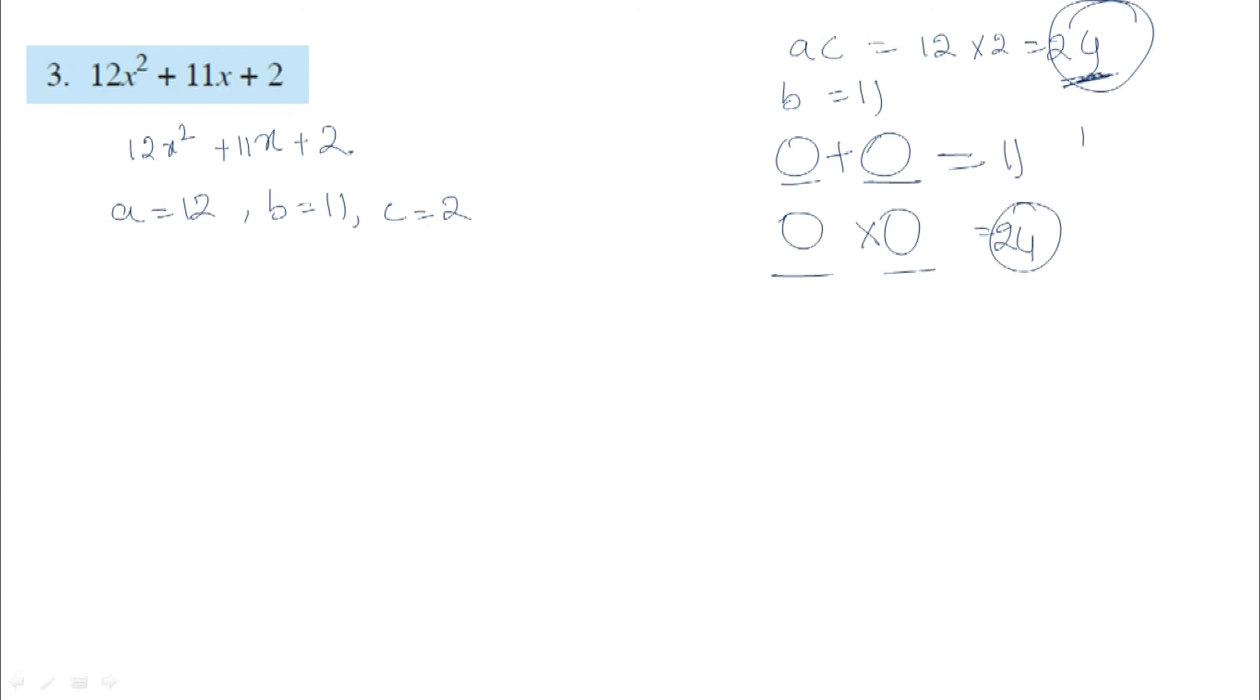First, write the factors of 24: 1 and 24, 2 and 12, 3 and 8, and 6 and 4. In these 4 pairs, when we multiply we get 24.